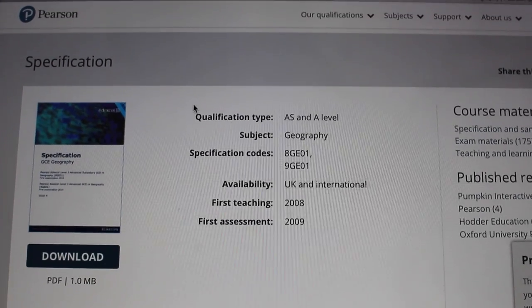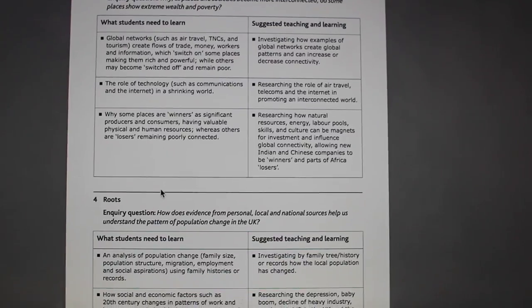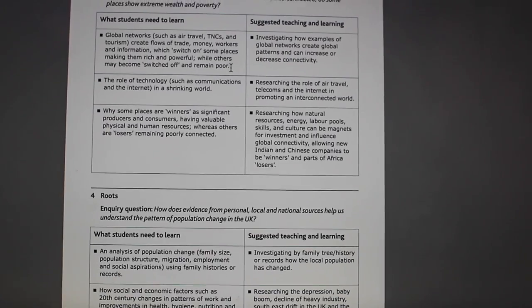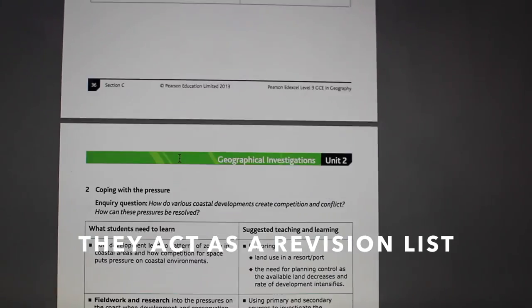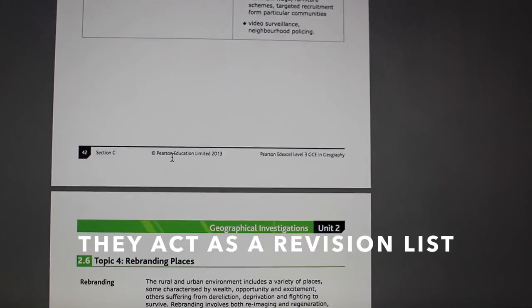Why I like specifications is because they'll have the perfect definitions for all the things that you need to know. With economics and geography, definitions are so important, and the same goes for maths and decision maths. On the specification they'll have subheadings and topics so you can tick them off once you've done them, so you know you've covered everything in the whole course. Once you've got the bare bones of everything you need to study, you can then also create a revision timeline.